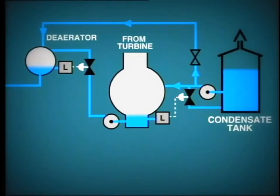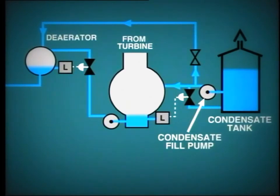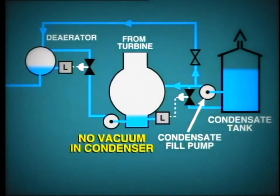One other important connection in the condensate system is from the condensate fill pump, which is located adjacent to the condensate tank. This fill pump provides sufficient pressure to allow us to add water to the de-aerator or the condenser when the unit is off-load. In this condition, of course, there would be no vacuum in the condenser to draw water from the condensate tank.